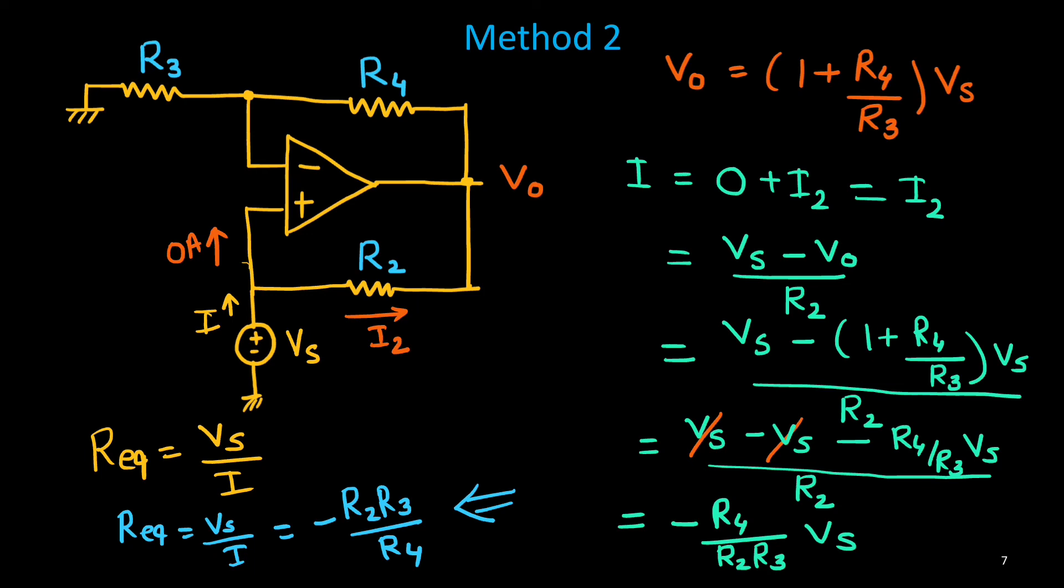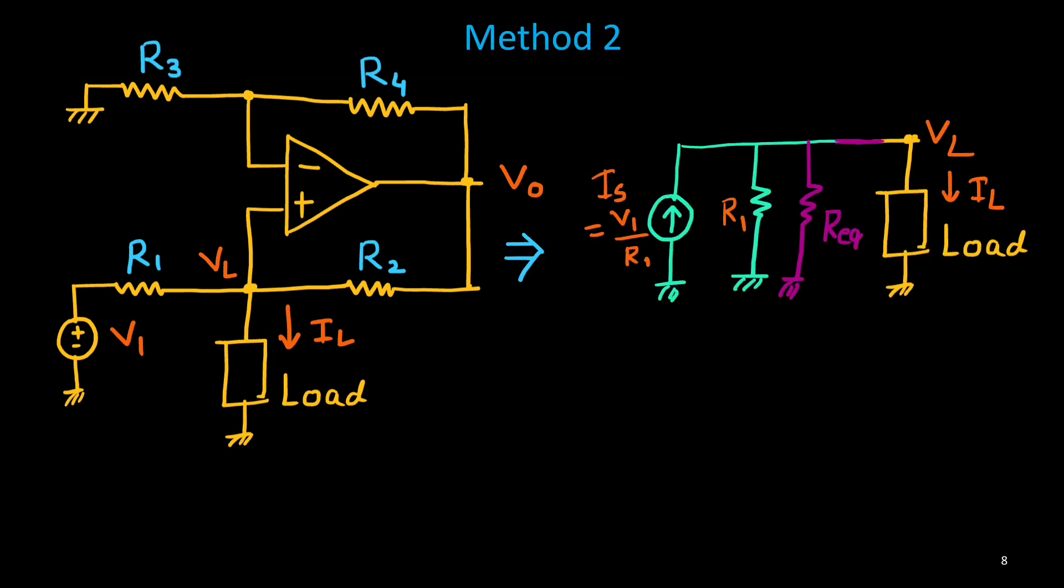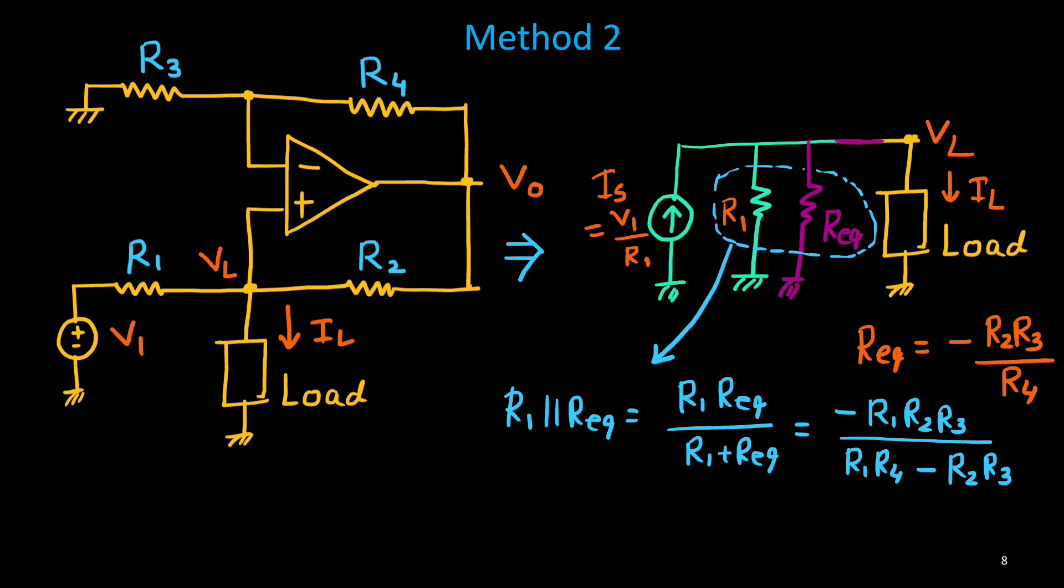So, this is our circuit. And we have simplified it to this one. One current source. That resistance R1. Now, this R equivalent. And this is the load. So, this R equivalent is given by minus R2, R3 upon R4. Now, we can combine these two. R1 R equivalent. They are both connected in parallel combination. So, this parallel combination, we can write as R1 R equivalent upon R1 plus R equivalent. We can replace R equivalent here. And you will see, you will get this one.